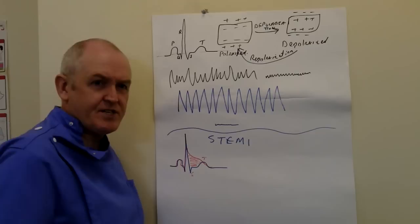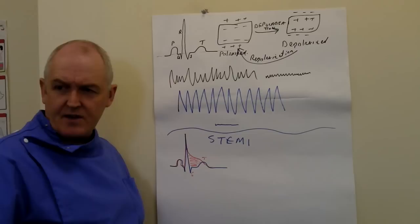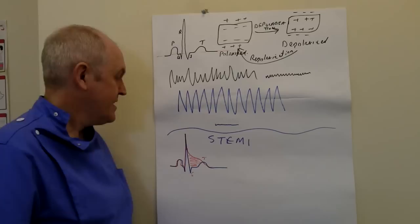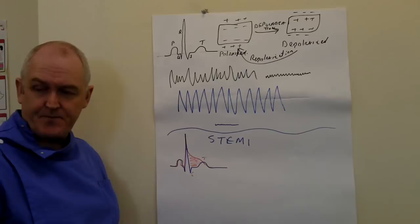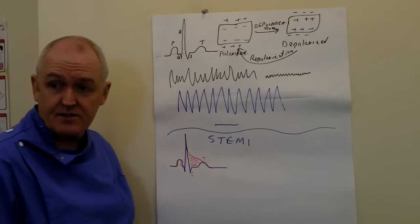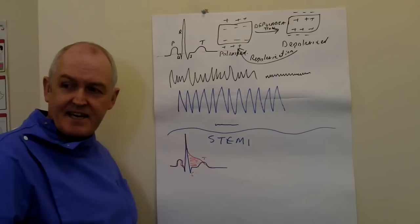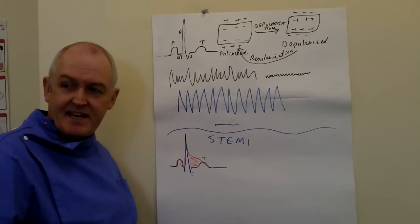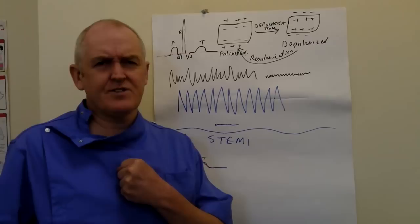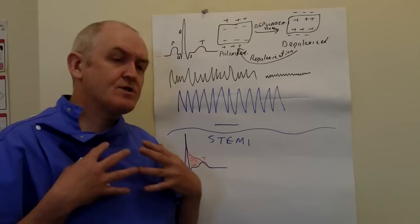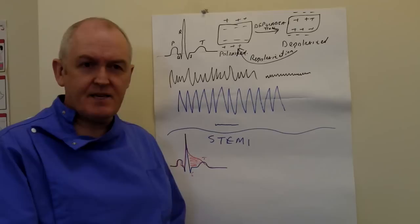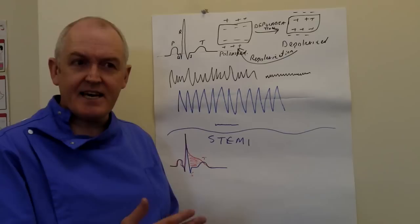We're looking for ST elevation which indicates infarction. The other common thing we see is ischaemic changes — and with ischaemic changes very often we get ST depression. You can actually get this with non-ST elevation myocardial infarctions where you get ischaemic areas in the heart, or if someone's got stable angina and you put them on a treadmill to exercise them and you induce the ischaemia in the myocardium.